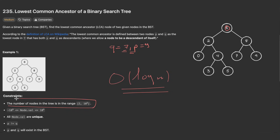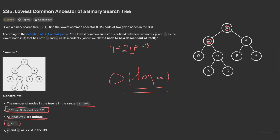Looking at the constraints: the number of nodes is in the range 2 to 10^5, all node values are unique, p is different from q, and both p and q are guaranteed to exist in the BST. That's why when we return the current value at the end, we are sure there is always exactly one valid result.